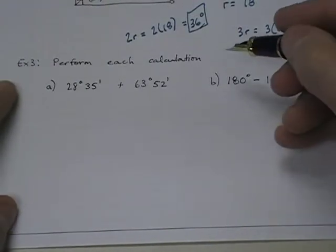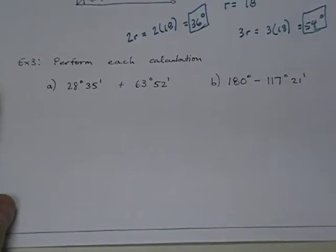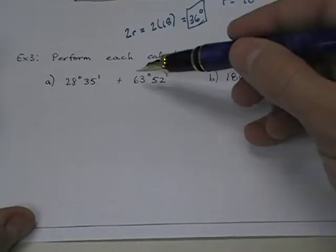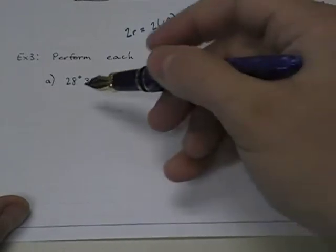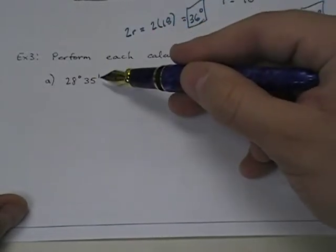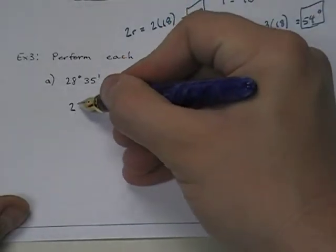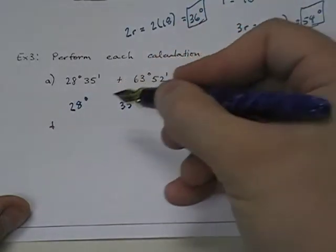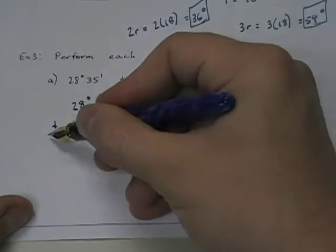And so to perform each calculation, basically, this is very much like addition and subtraction that we had in elementary school, except we have two units instead of one. And so we have some different types of carries. So I'm going to start with problem A here. I'm adding 28 degrees and 35 minutes to 63 degrees and 52 minutes. And so the way we do this is we say 28 degrees, 35 minutes, plus 63 degrees, 52 minutes.